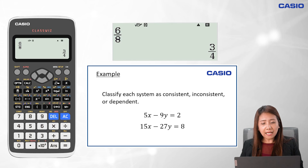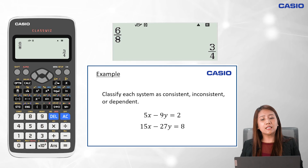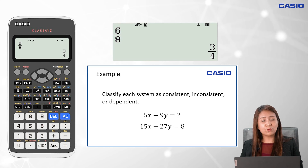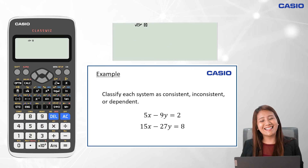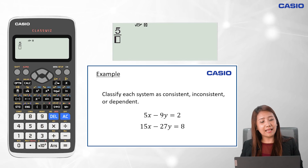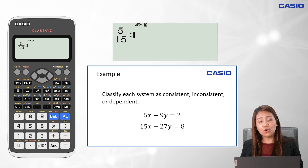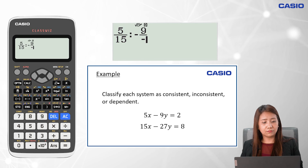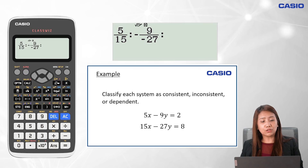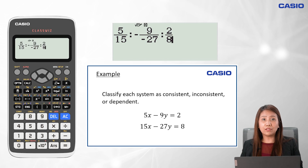Let's have another example. With the same task, we're asked to classify each system as consistent, inconsistent, or dependent. Again, let's get the ratio of the coefficient of x, coefficient of y, and the constant term. Using our Casio Classwiz, we click on Menu 1. We get the ratio of the coefficient of x starting with 5, fraction key, and then 15 for the denominator. Arrow right, Alpha Integral for the colon. Then let's get the ratio of the coefficient of y: we have negative 9, fraction key, negative 27 for the denominator. Then arrow right, Alpha Integral, and for the ratio of the constant term, we key in 2, followed by the fraction key, and 8. Now, to see if they have the same value, we click the equal sign.